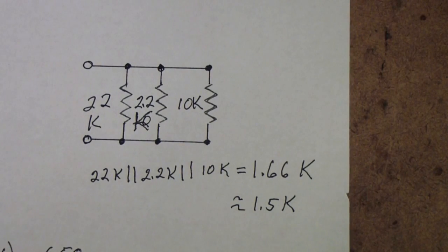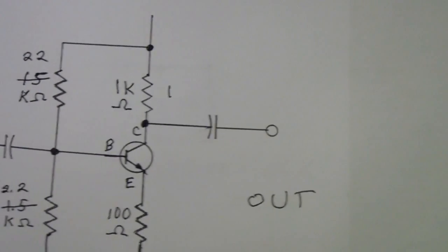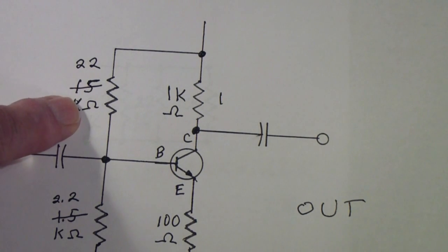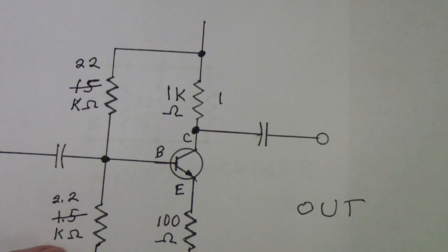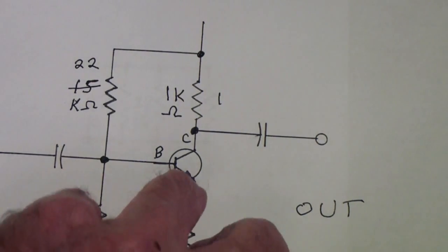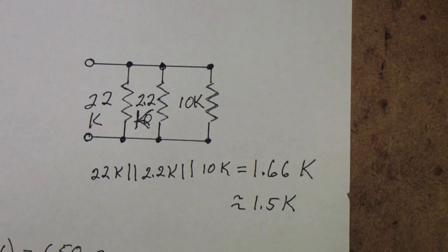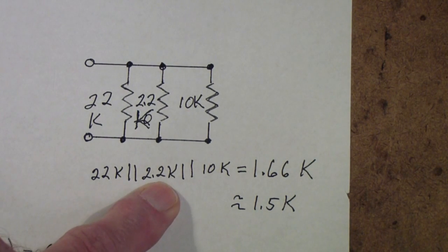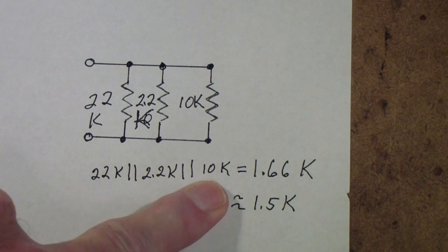So our problem then just comes down to we have three resistors. We have the 22k resistor that we put up here. We have the 2.2k resistor that we put down here. And then we have the resistor looking into the base. Those are all in parallel. 22k in parallel with 2.2k in parallel with 10k.